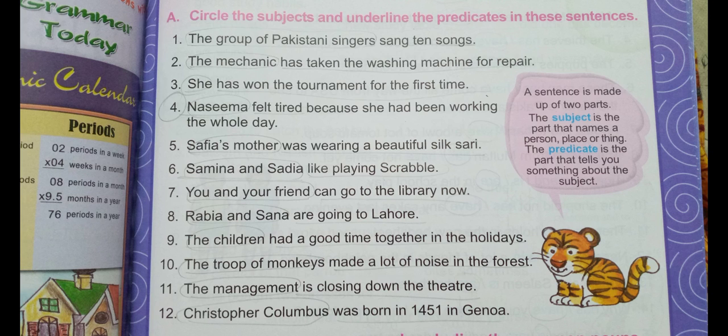Number seven: 'You and your friend can go to the library now.' Here 'you and your friend' is our subject, and 'can go to the library now' is our predicate. This exercise has 12 sentences. You have to take your course book and solve this exercise in pencil. When we first get to school we will review it. Now let's move to topic number two.